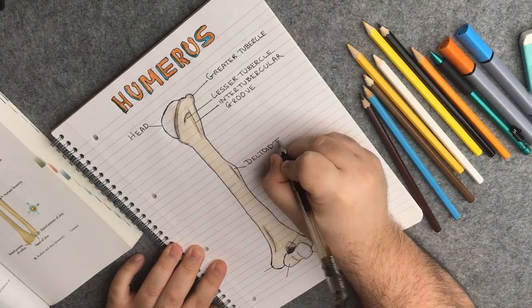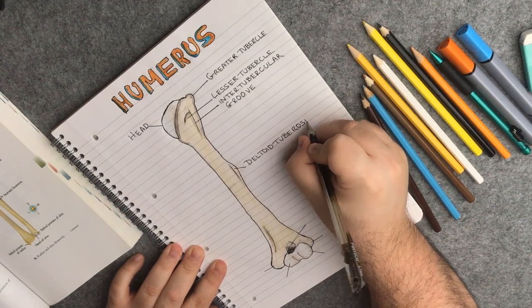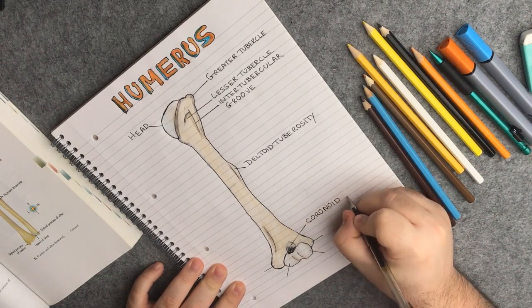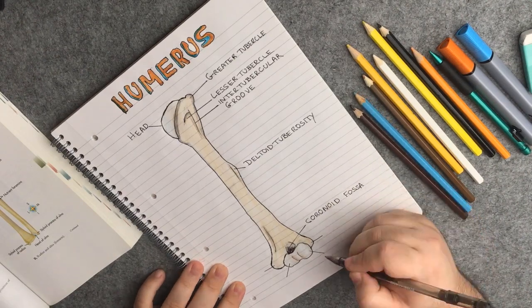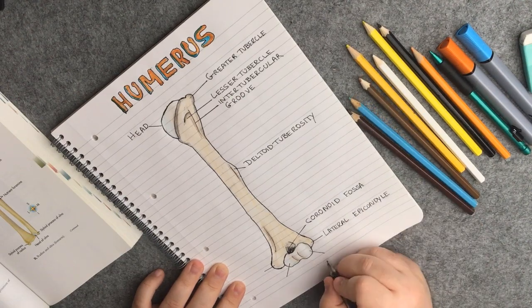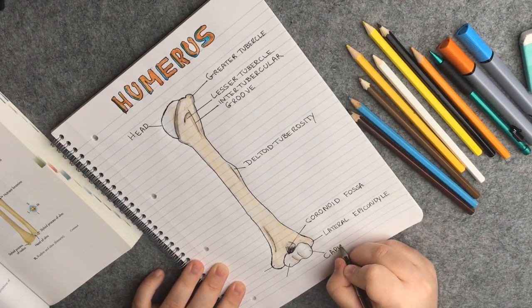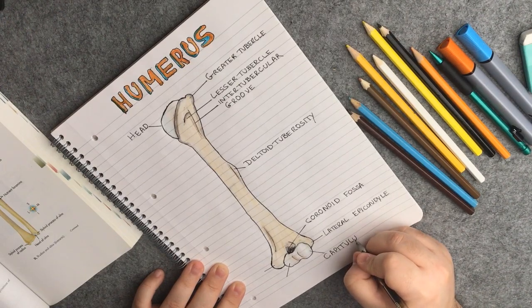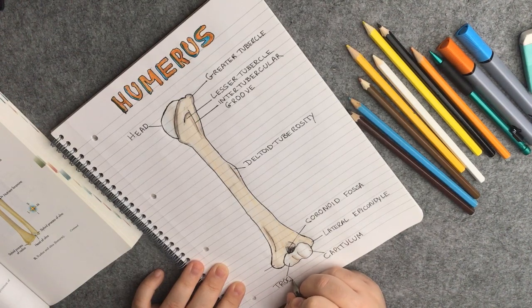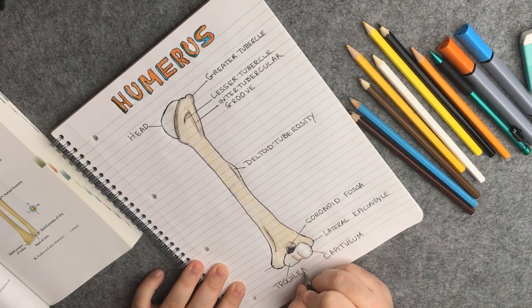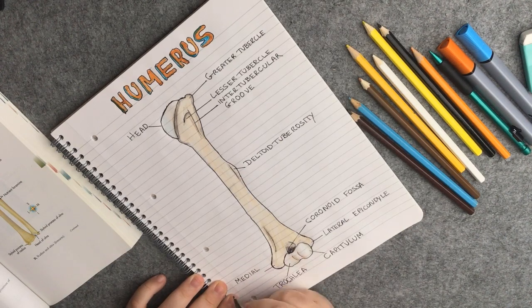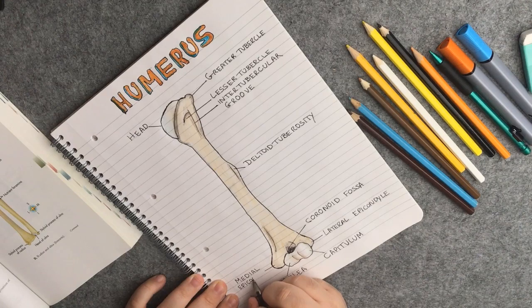Further down, the deltoid tuberosity, where the deltoid muscle attaches to. The coronoid fossa, which is a depression where the coronoid process of the ulna goes into during flexion. We have the lateral epicondyle here on the right side of the image. The capitulum, which is a smooth round eminence on the lateral portion of the distal articular surface of the humerus. Next to the capitulum, we have the trochlea, which articulates with a trochlear notch of the ulna. And the final landmark on my drawing is going to be the medial epicondyle. And note here that it is a bit larger and more prominent than the lateral one.